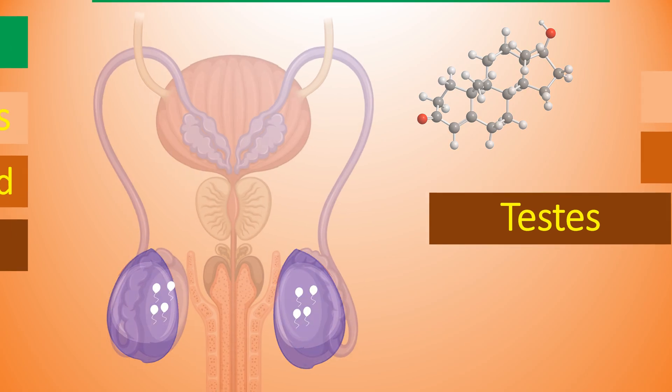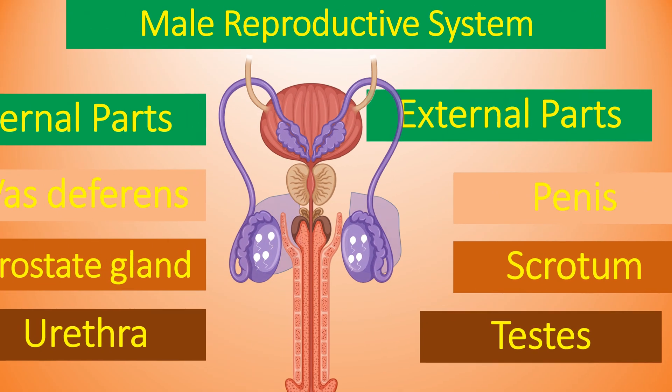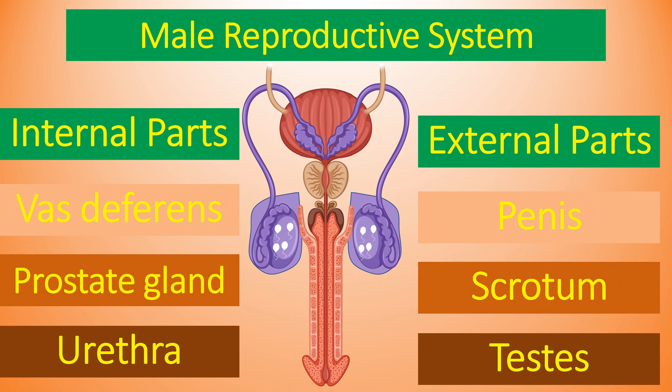We have learned about the internal and external parts of the male reproductive system in detail. Vas deferens, prostate gland, and urethra are the internal parts. Likewise, testes, scrotum, and penis are the external parts.